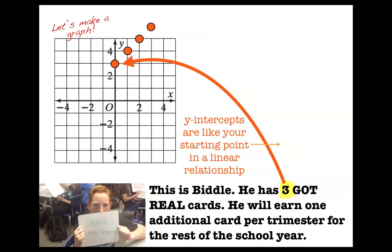So the fancy word for your starting point in math is called an initial value. The initial value of this linear relationship is 3. And every relationship has to start somewhere, right? So this linear relationship is starting with an initial value of 3. And that initial value of 3 is just like the b-value, or the y-intercept, of this linear relationship.